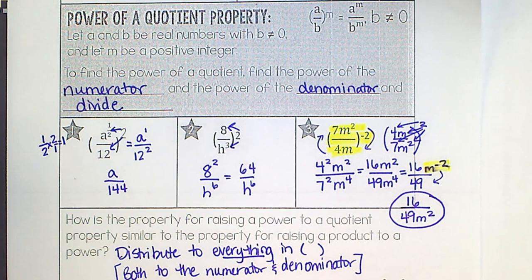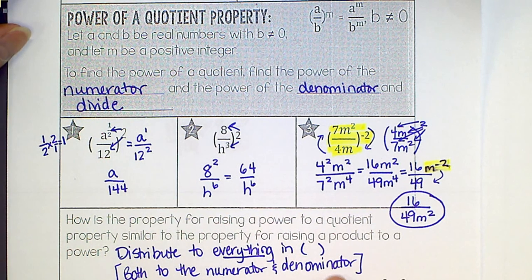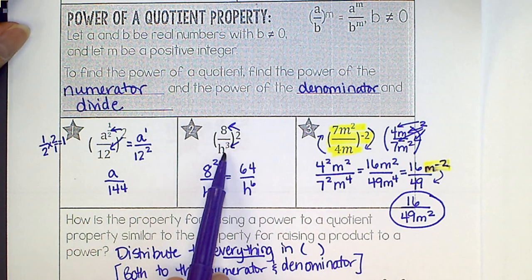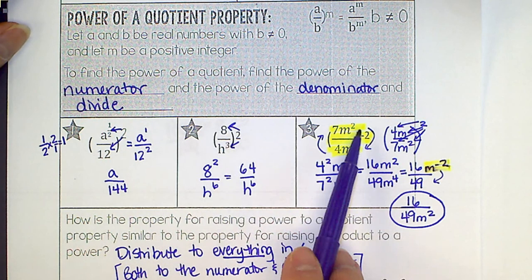And then you can go ahead and pause the video and fill in: how is the property for raising a power to a quotient property similar to the property for raising a product to a power? Well, the same thing. We need to distribute to everything in the parentheses, both to the numerator and the denominator. So like we did here, and here, and here.